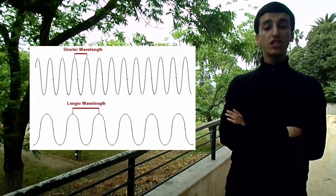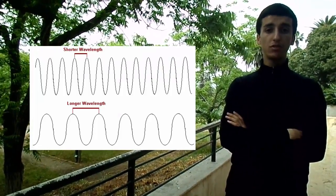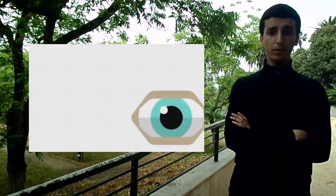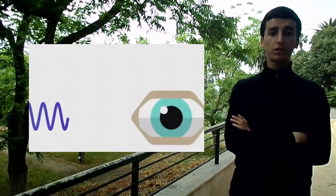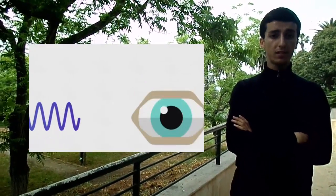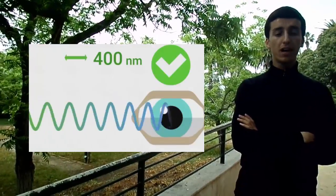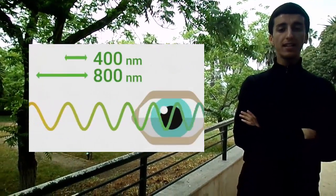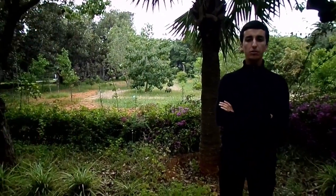Electromagnetic waves and photon waves are characterized by the wavelength, which is the distance between peaks. The human eye is able to detect electromagnetic waves with a wavelength between 400 nanometers and 800 nanometers.